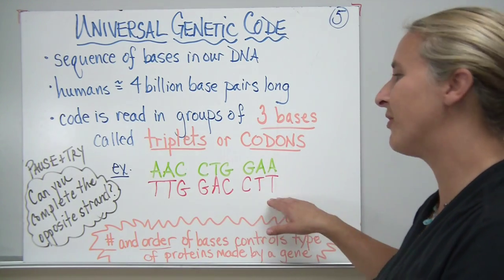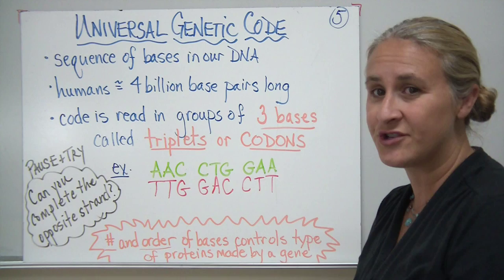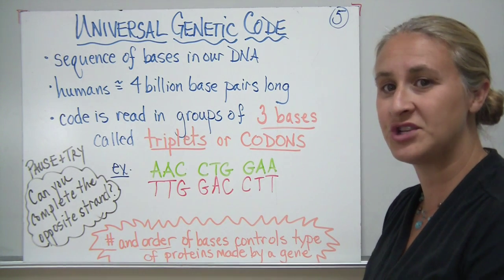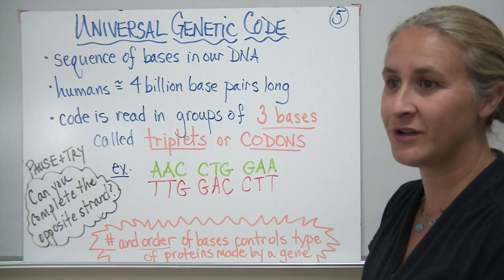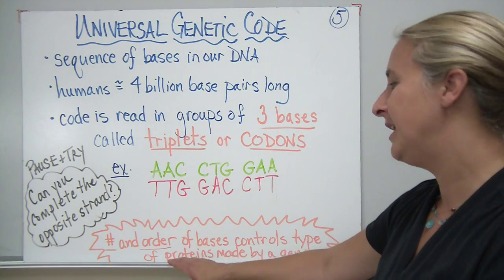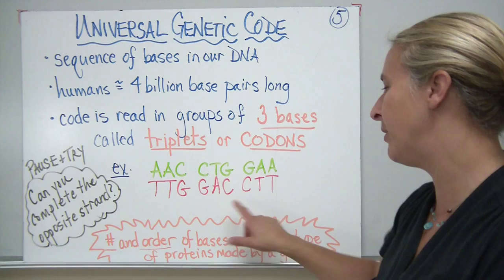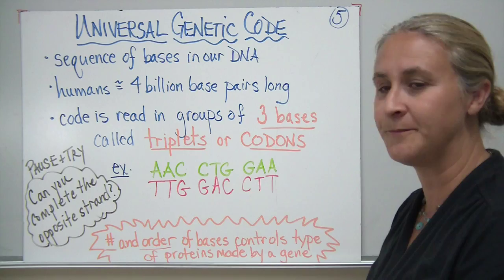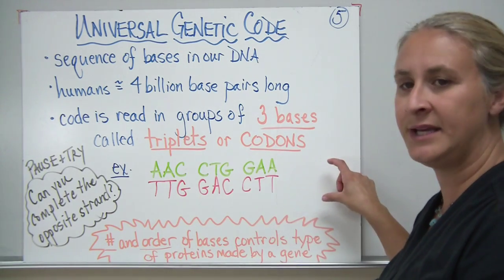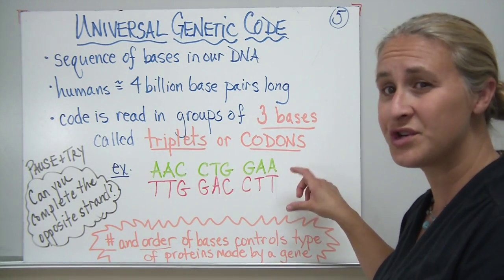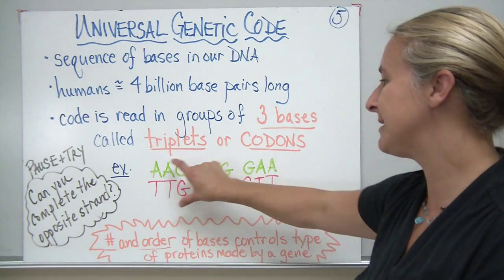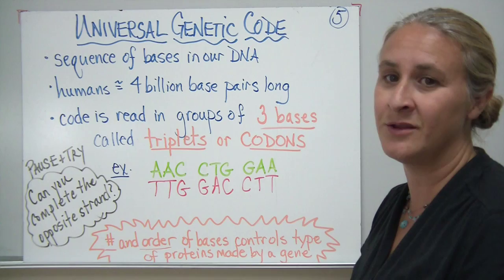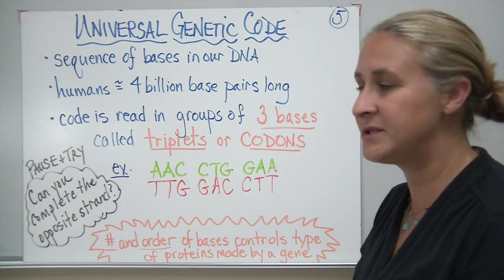That strand could eventually, if it was long enough, make up a protein which would be part of one of our genes. Our genes code for proteins, and the number and order of the bases control the type of proteins that are made by a gene. Really, all a gene is is just a sequence or a portion of your DNA, and that sequence is going to control your traits by controlling the proteins that get made.